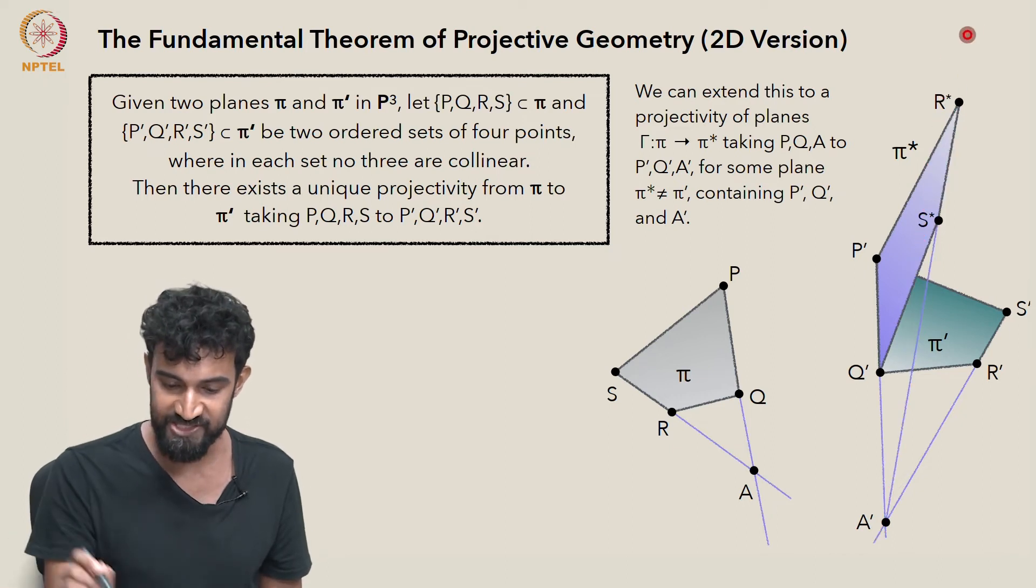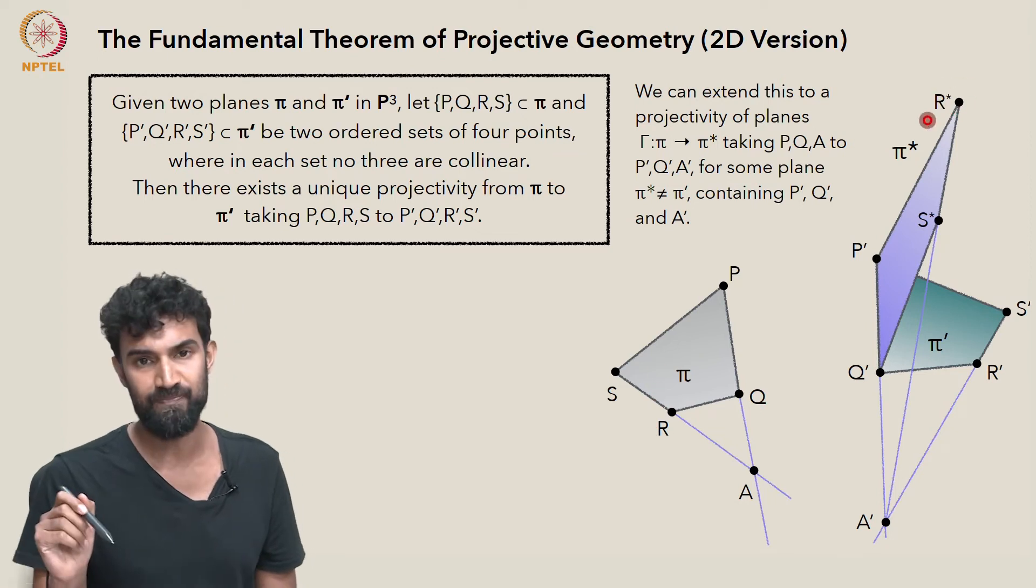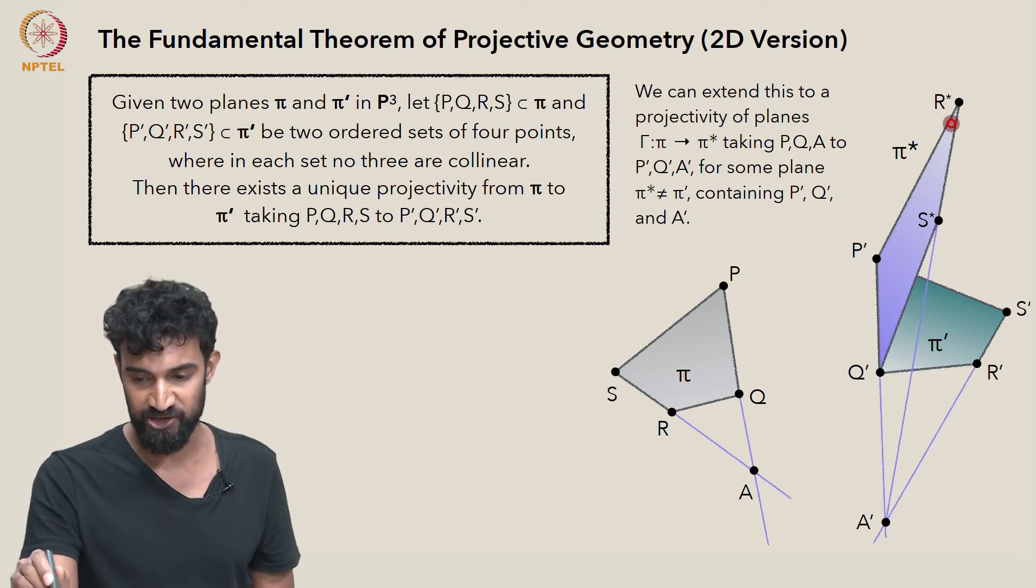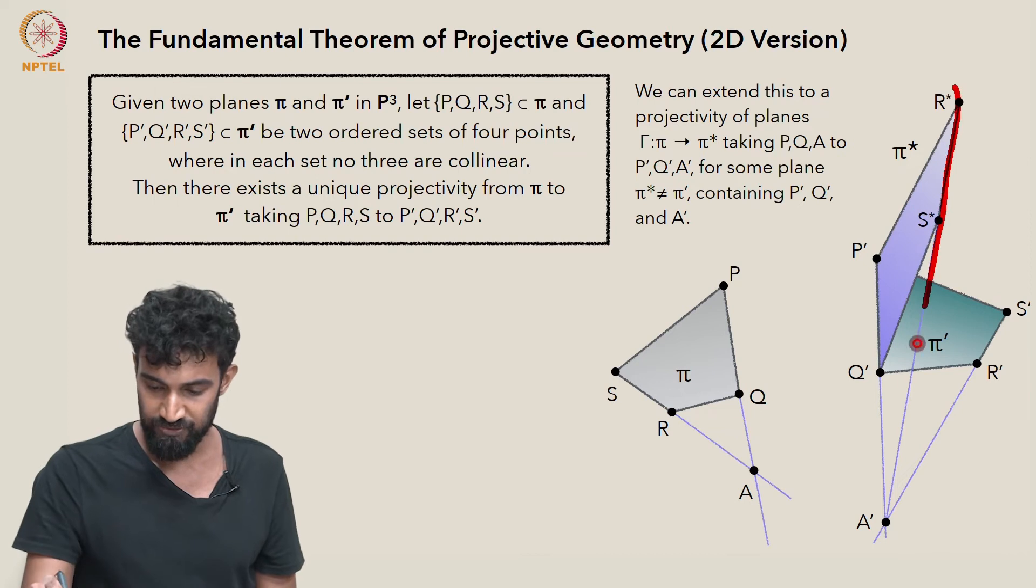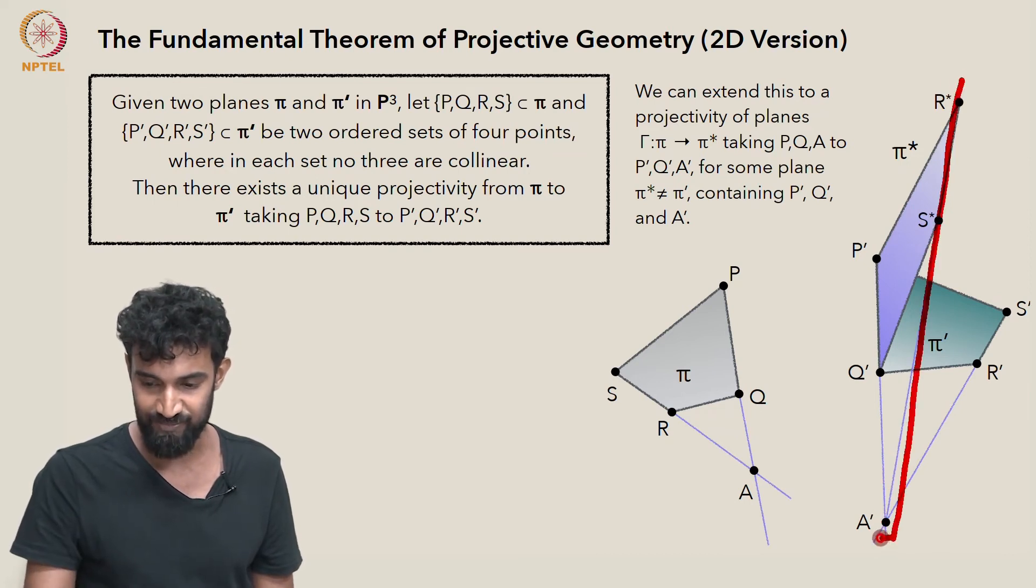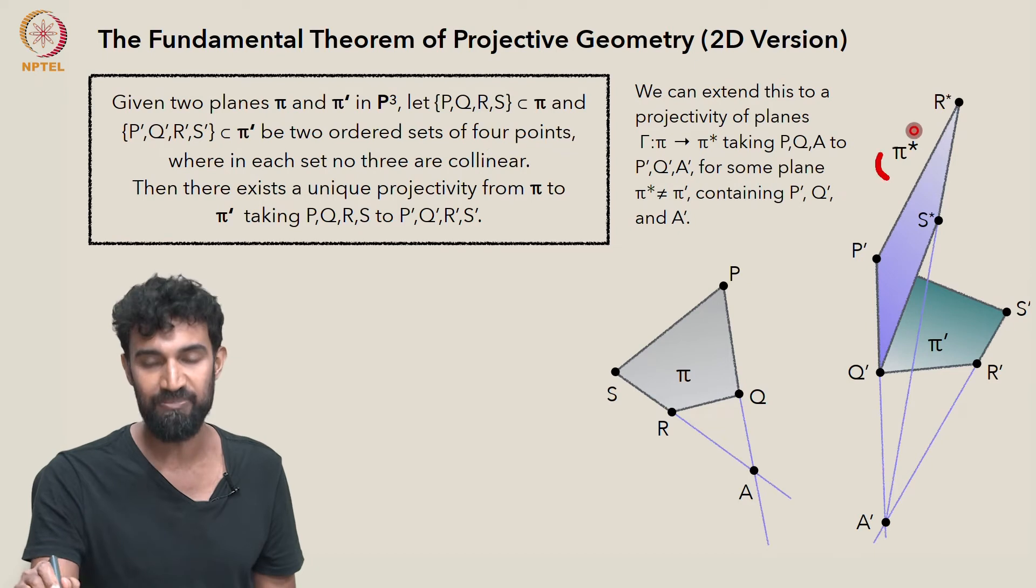And on that line, it's going to take S to some point S star and R to some point R star. So we get these new points S star and R star, which do form a line that hits A prime and they live somewhere in π star.